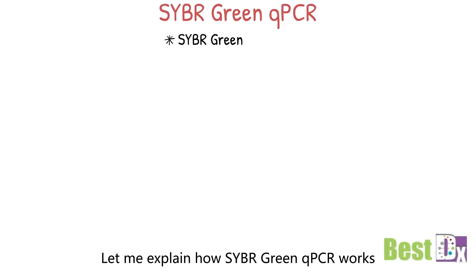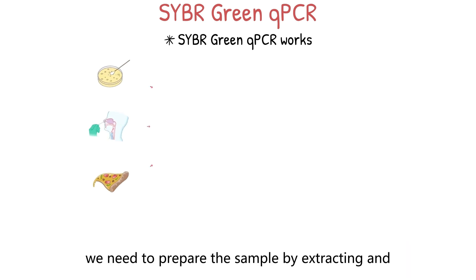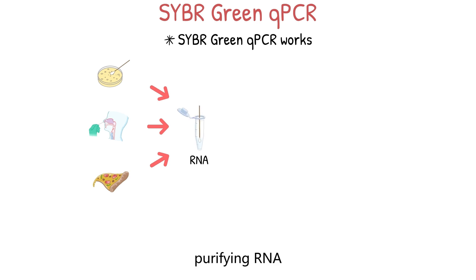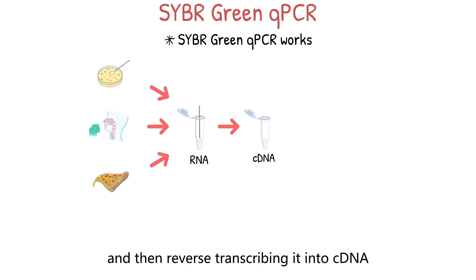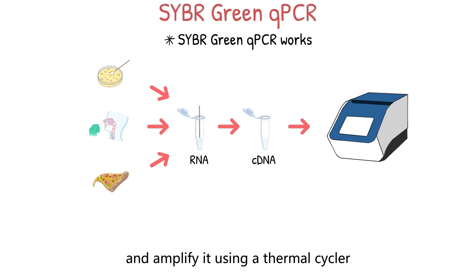To explain how CyberGreen qPCR works: first, we prepare the sample by extracting and purifying RNA, and then reverse transcribing it into cDNA. Next, we add specific primers to the cDNA and amplify it using a thermal cycler.